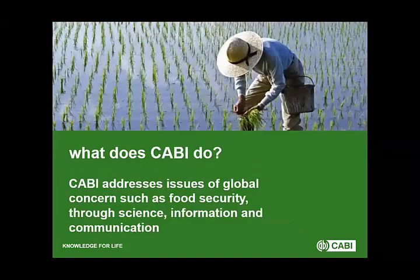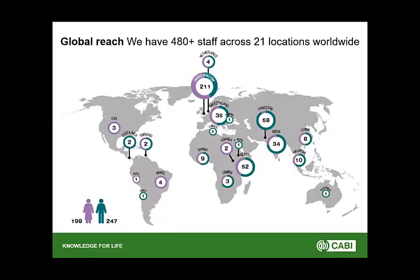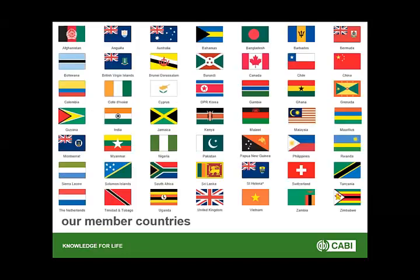We address food security through science, information, and communication. CABI has been established since 1910 by a United Nations treaty, focused on environment and agriculture, and owned by 48 member countries — both developing and developed nations. We don't believe in differences between nations; science needs to be diffused throughout with no barriers.